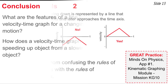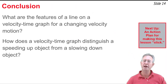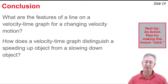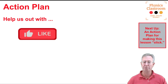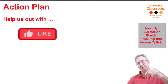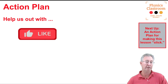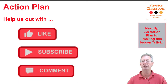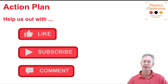We've figured out how to use the features of a line on a velocity-time graph to describe the motion of a changing velocity object, and how to distinguish speeding up from slowing down. If you liked the video, please press the like button and subscribe to the channel. Leave questions or comments in the comment section below.